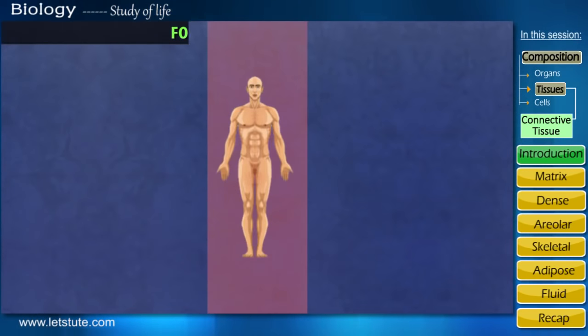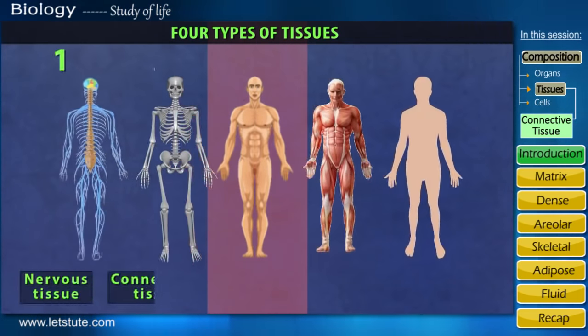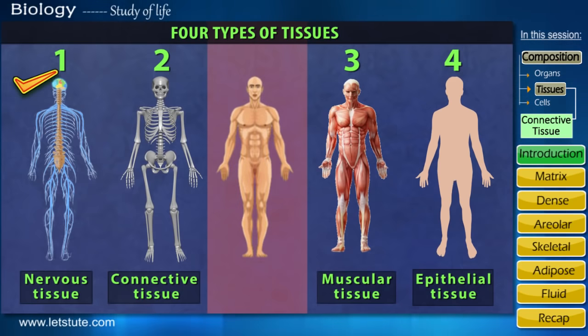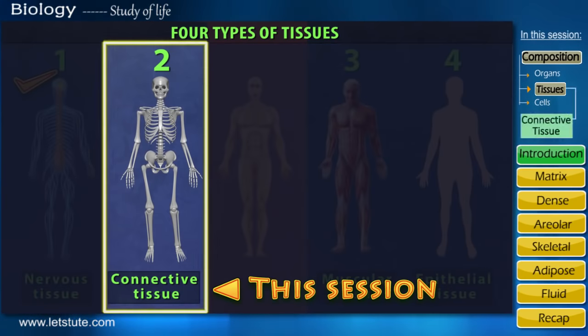The human body is made up of four types of tissues. In our last session, we saw how important the nervous tissue is, and today we'll be dealing with the connective tissue.